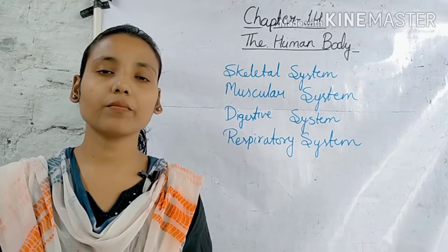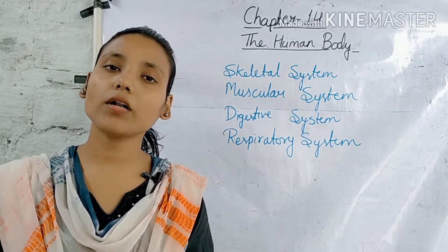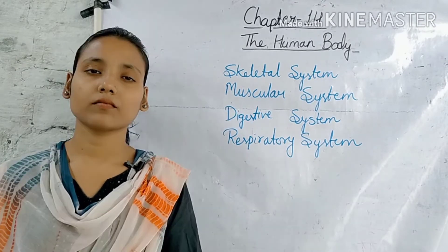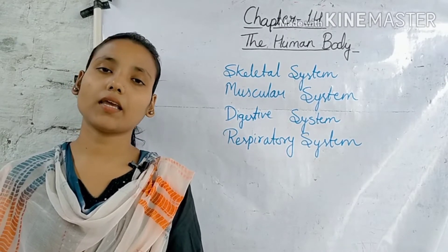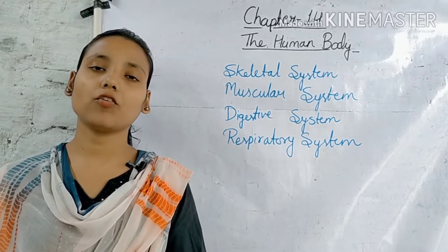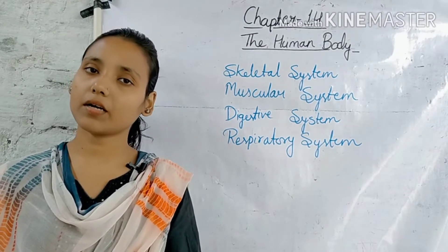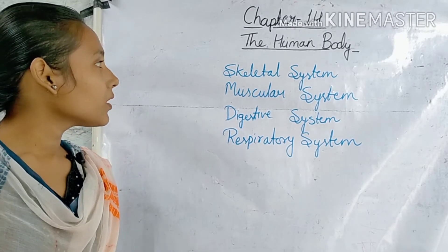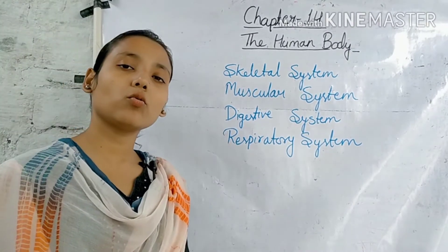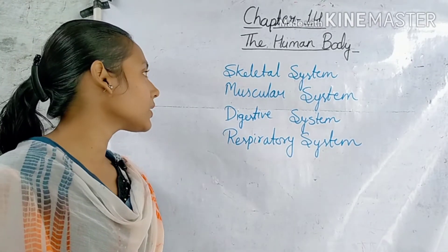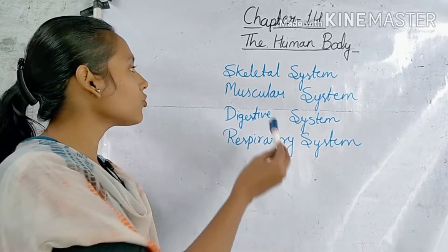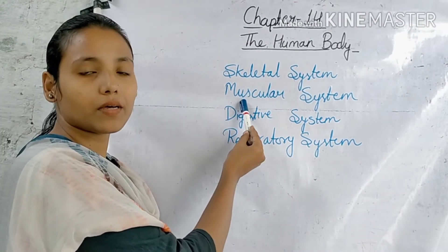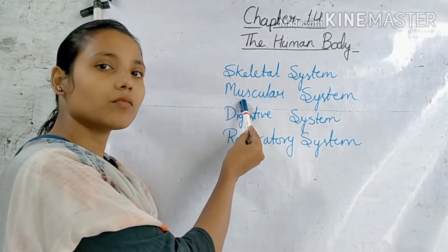Bachcho, हम अपने previous class में human body यानि की मानव के शरीर के organ system यानि की अंग प्रणालियों के बारे में पढ़ रहे थे। और bachcho, हमने इस chapter में two topics अपना complete भी कर लिया था। First था bachcho, skeletal system। Second, muscular system।